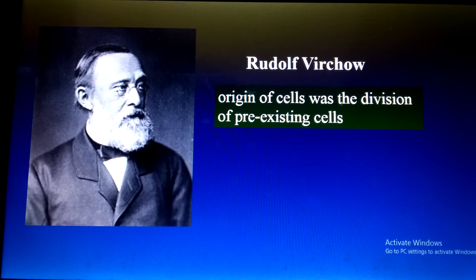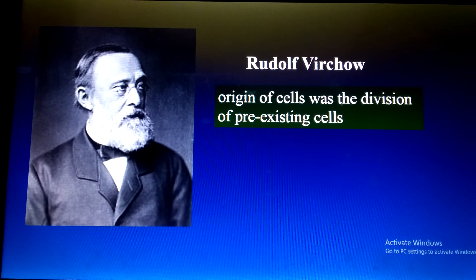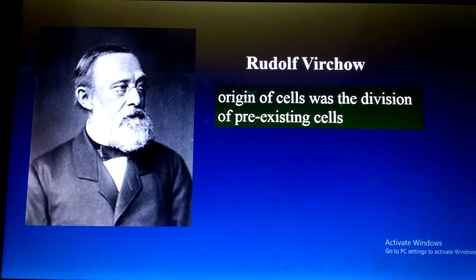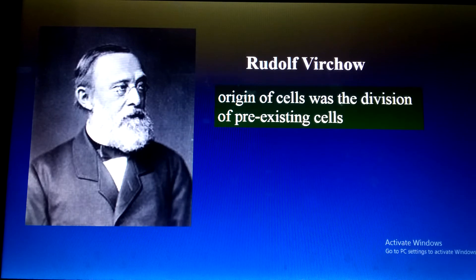The next important contributor was Rudolf Virchow, who gave the most important feature of the cell theory — the origin of the cell. He stated that new cells arise from the division of pre-existing cells. So it was Rudolf Virchow who gave the concept that cells originate from pre-existing cells.